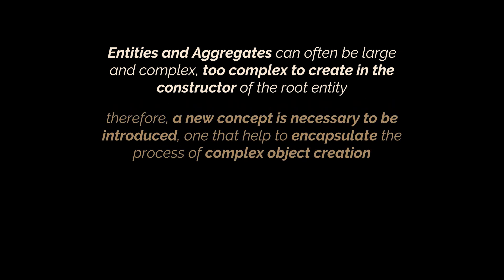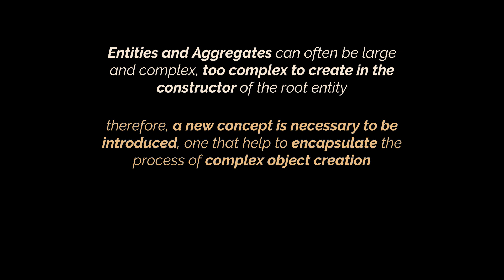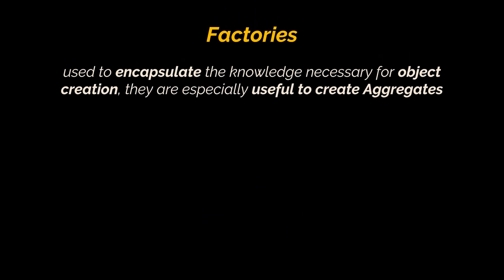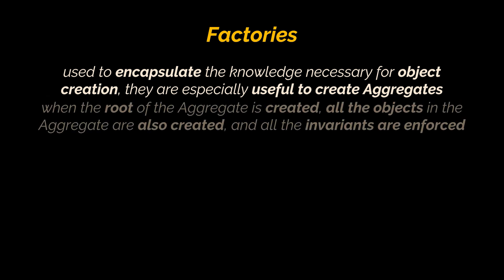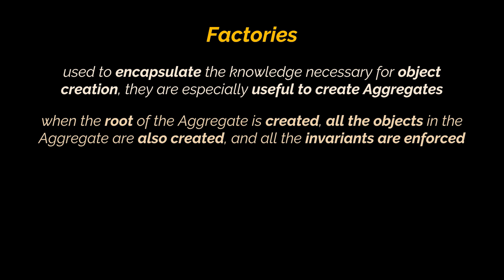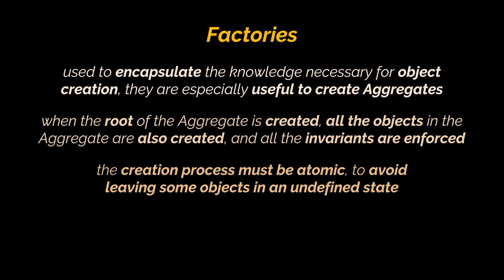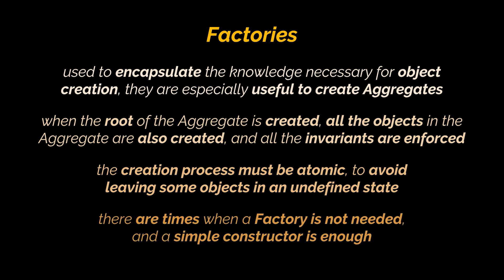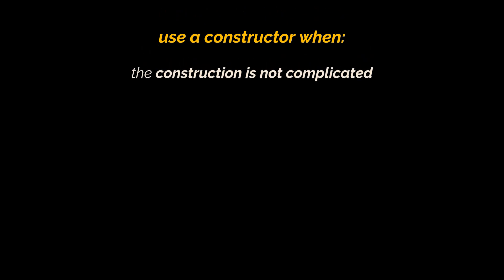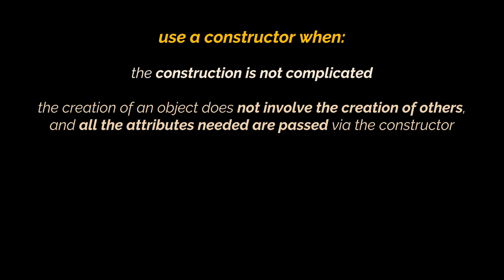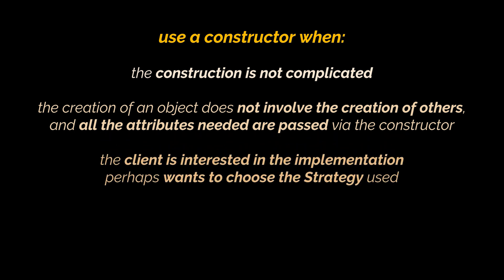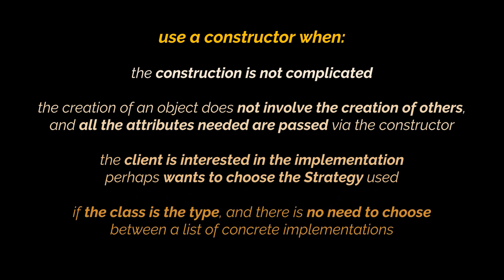Entities and aggregates can often be large and complex — too complex to create in the constructor of the root entity. Therefore a new concept is necessary: the factory. Factories are used to encapsulate the knowledge necessary for object creation and are especially useful to create aggregates. When the root of the aggregate is created, all objects contained by the aggregate are created along with it and all invariants are enforced. The creation process must be atomic — if not, there is a chance it will be half-done, leaving objects in an undefined state. Use a simple constructor when construction is not complicated, does not involve creating other objects, or there is no class hierarchy involved.